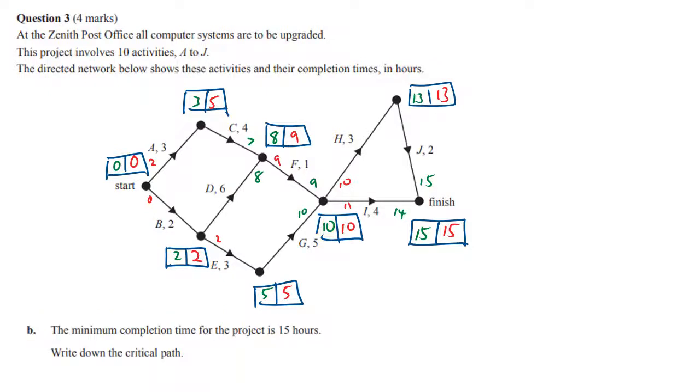We're going to find the minimum completion time. That's a code phrase that basically means we're doing critical path analysis. For the project it's 15 hours, we did get 15 so we haven't made any mistakes so far. The critical path is where there's no float, EST and LST are the same. We're going to join up all those boxes, which means we're including activities B, E, G, H, and J.